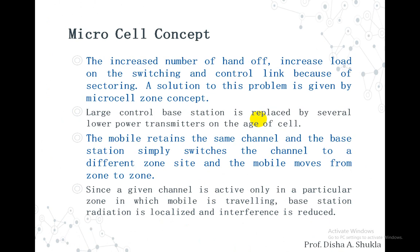The increased number of handoffs, whenever we increase the number of cells or split a particular cell making cell size smaller, will increase the load on the switching and control link because of sectoring. So the solution to this problem is given using the microcell zone concept.